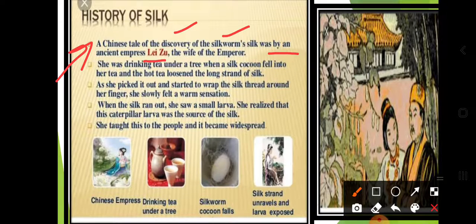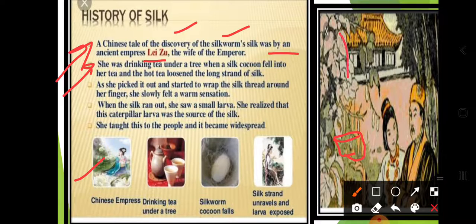Li Zu was the wife of a great emperor. One day she was drinking tea under a tree when a silk cocoon fell into her tea cup. Later she found that the hot tea had loosened a long strand of silk from the cocoon.